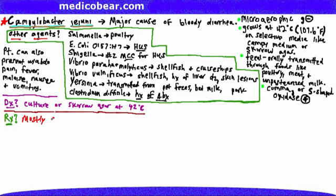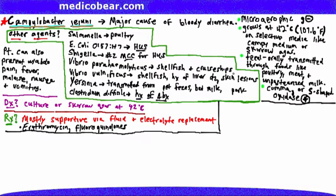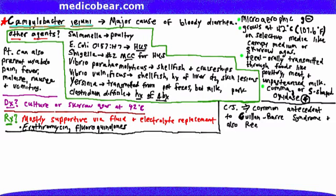Treatment is mostly supportive via fluid and electrolyte replacement, because Campylobacter jejuni infection is generally self-limiting over about three to five days, although it can last longer. Erythromycin, a macrolide, and fluoroquinolones can be used to treat an ongoing infection. Campylobacter jejuni is a common antecedent to Guillain-Barré syndrome and also reactive arthritis.